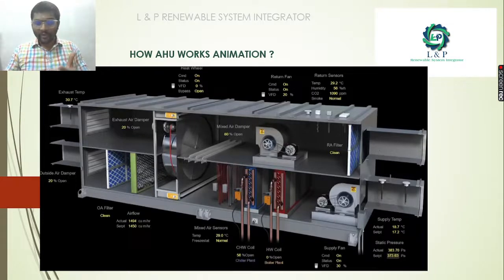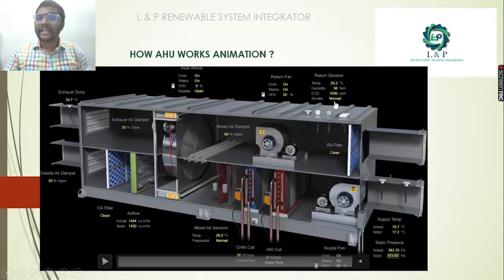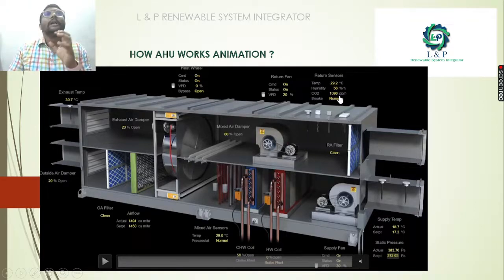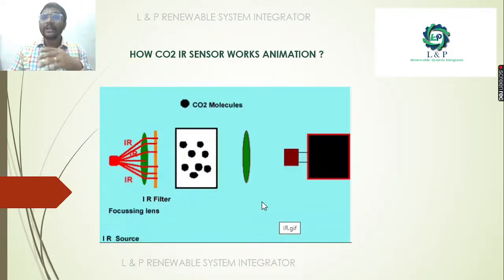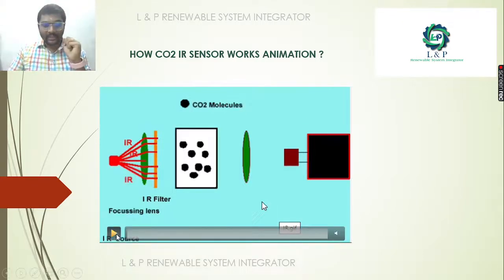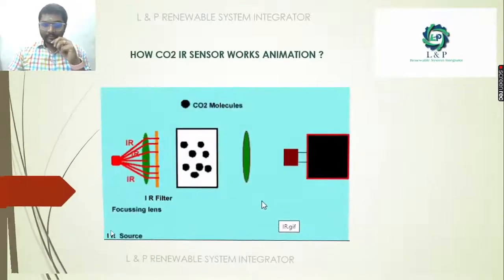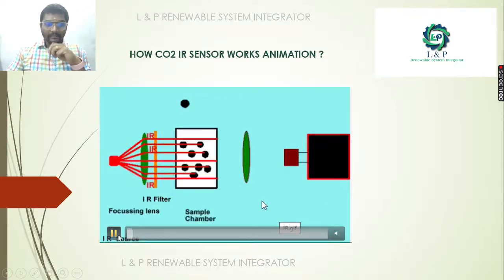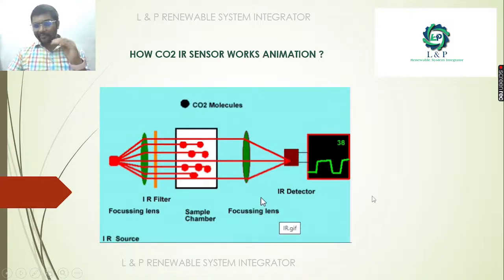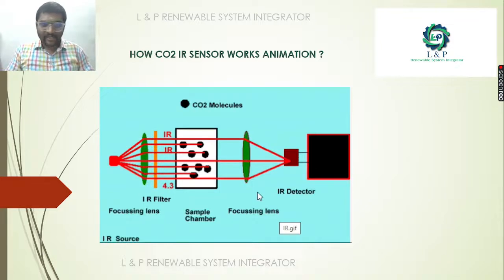Even for air handling units in the return side, a CO2 sensor will be there so we can know how much CO2 presence — how much PPM — is in the return air that we are taking outside. These CO2 sensors use infrared radiation as a source. We can find out CO2 presence inside the gas molecules. We are passing infrared light and CO2 molecules are absorbing it around 4.3 microns. Because of that, whatever we are sending, we won't receive the same 100%. Using this difference, we can easily identify the CO2 presence and the number of CO2 molecules inside that particular building.